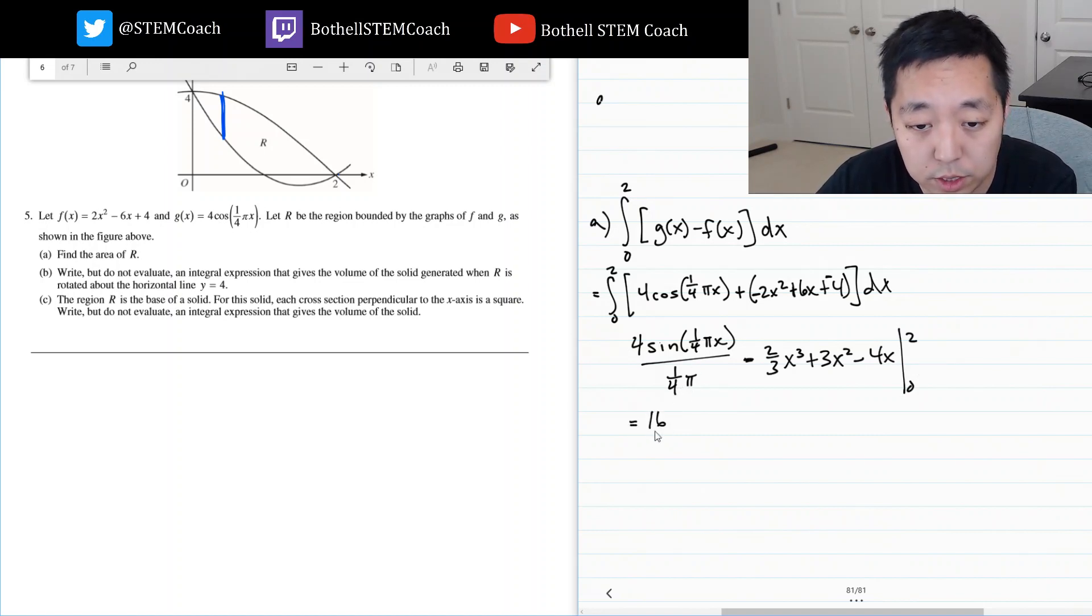This is 16 over π. Sine of, let's see, π over 2. If I plug in 2, it's π over 2. That's 1. Sine of 0 is 0. Minus 2/3 times 2³, plus 3 times 2², minus 4 times 2. And I ignore the 0 because when I plug in 0, I just get 0 there. So there you go, 16 over π.